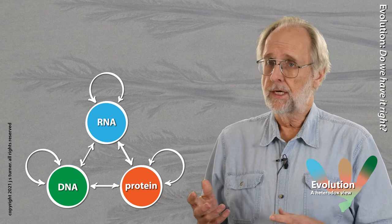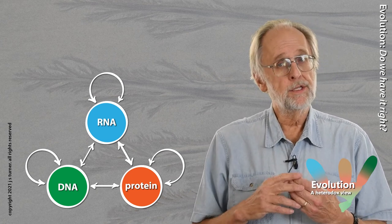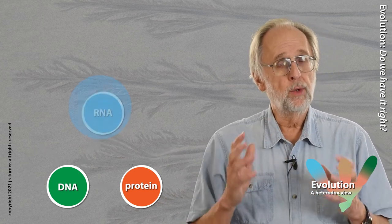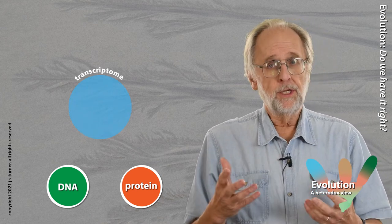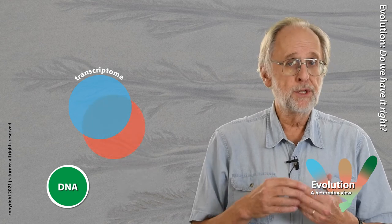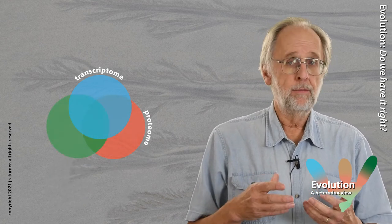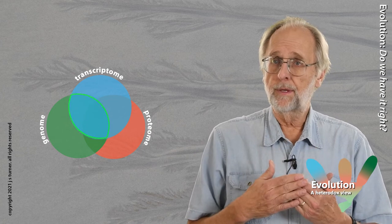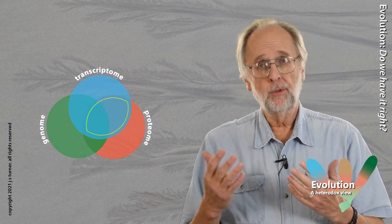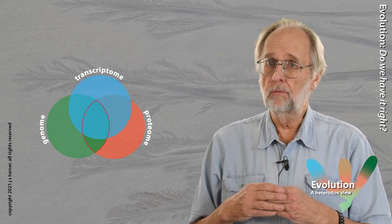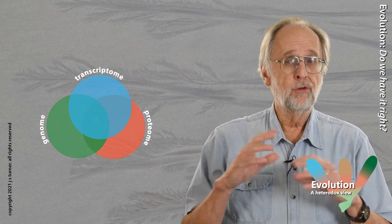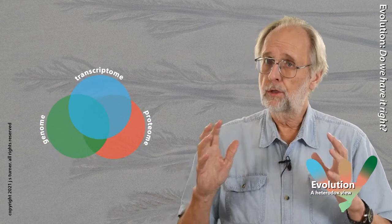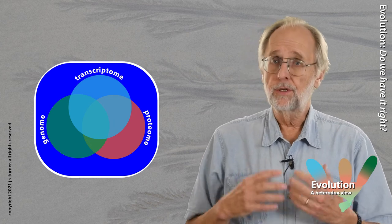So complicated are these interactions that biologists have turned to a different way of organizing their thinking. The whole range of interactions of RNA are lumped into a large realm known as the transcriptome. Proteins have their own realm of interaction known as the proteome. And DNA now inhabits its own realm — the traditional genome. The genome and transcriptome overlap quite a bit, as do interactions between transcriptome and proteome, and between proteome and genome. There is a realm where all three interact. The genome, transcriptome, and proteome are all enclosed within a cell membrane, which comprises the cell's metabolome.